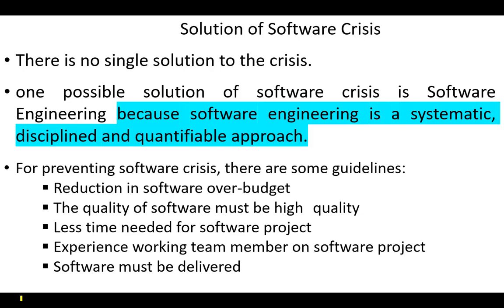For preventing software crisis, there are some guidelines: reduction of software over budget, the quality of software must be high, less time needed for software projects, experienced working team members on software projects, and software must be delivered.